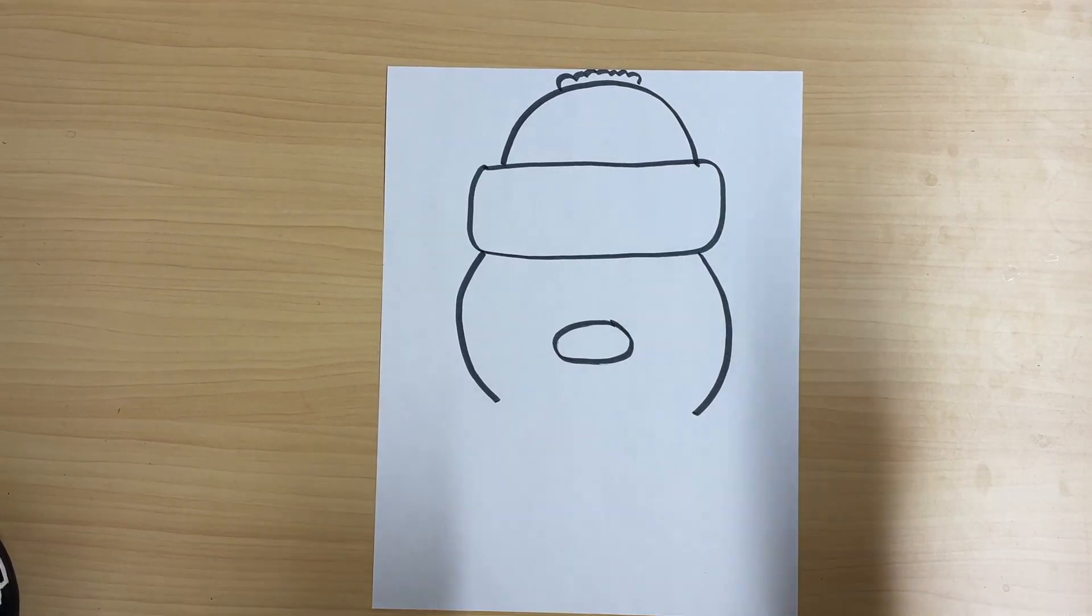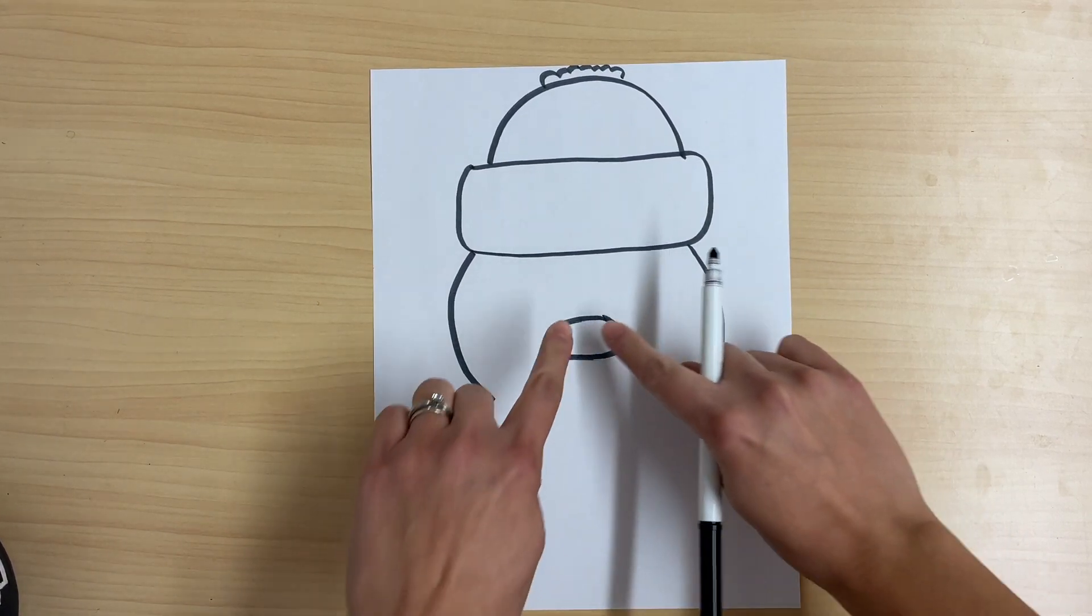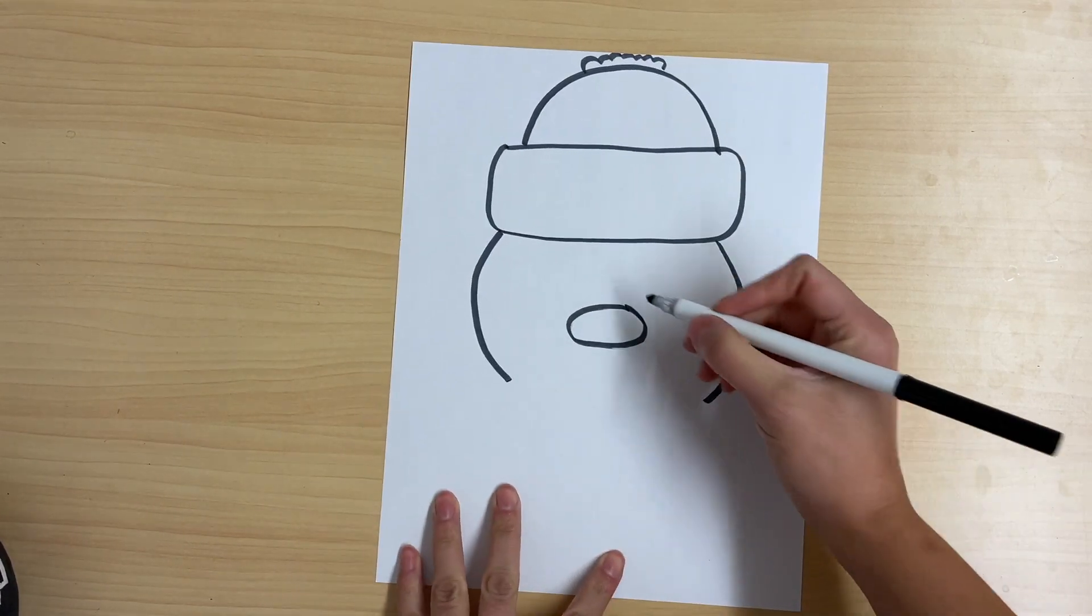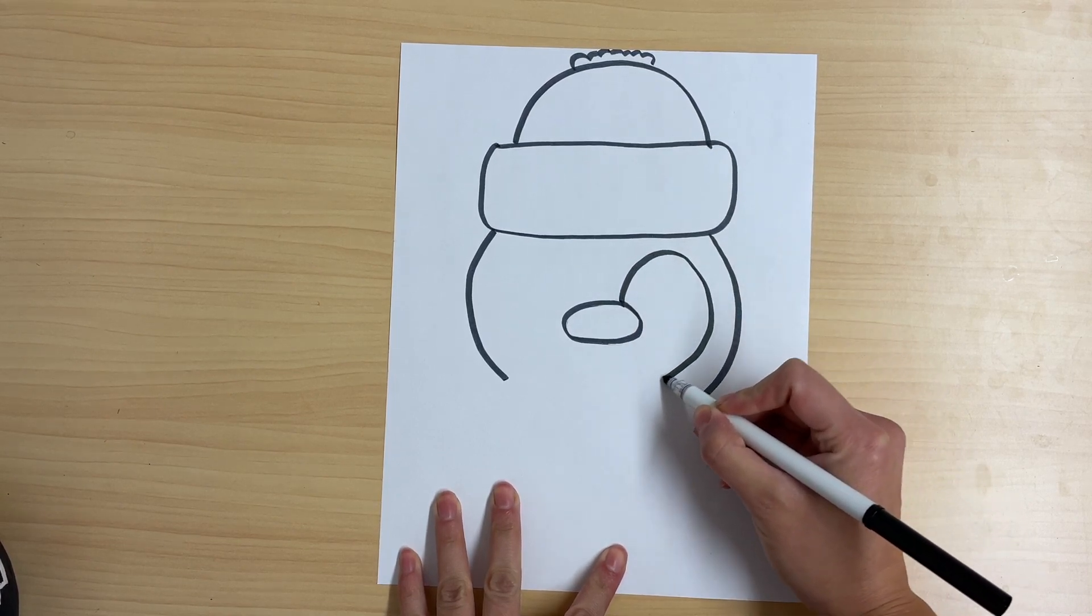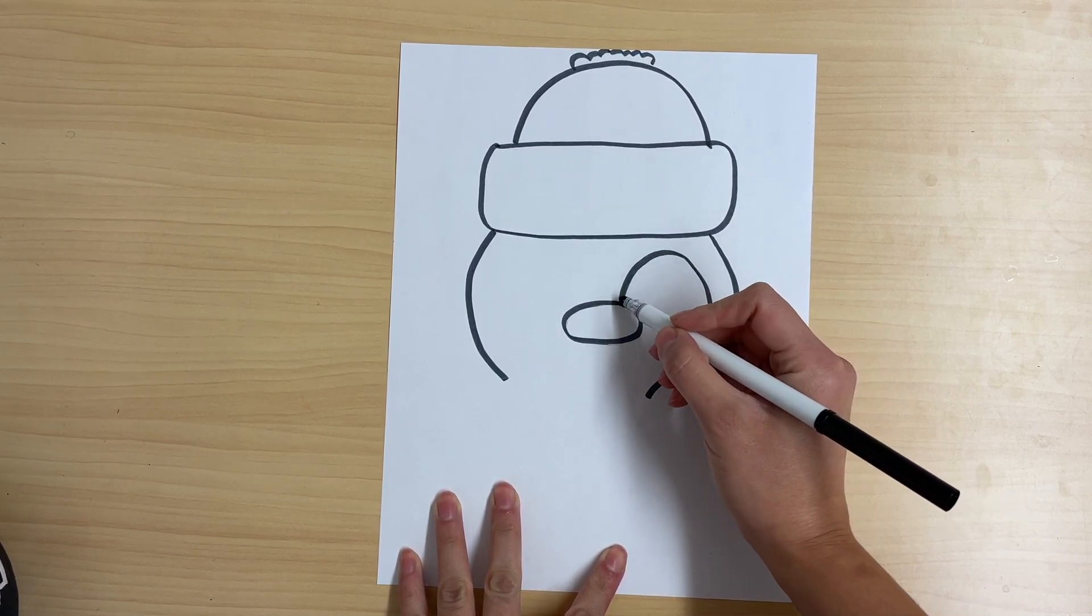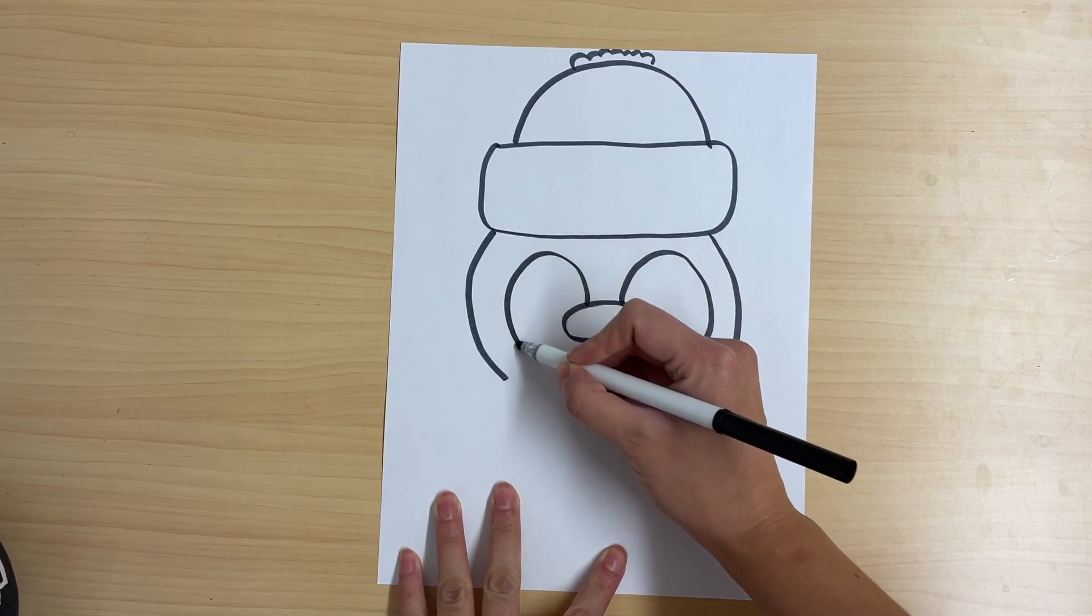Now I'm going to draw two lines like I'm drawing a heart but the two lines are not going to connect with each other. So I'm going to draw one side of the heart like this and then it's not going to connect. I'm going to make a space here and draw the other side of the heart.